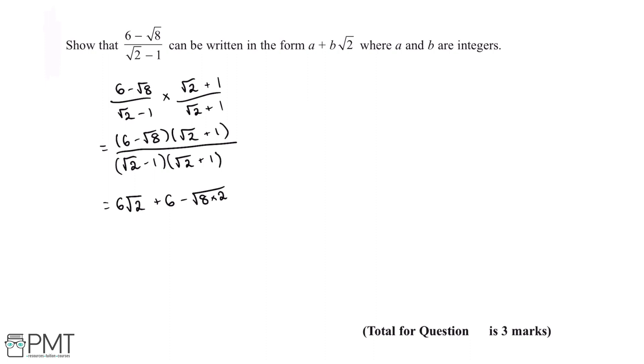And now we'll do the same for the denominator of this fraction. So √2 multiplied by √2 will give us 2. √2 multiplied by 1 will give us plus √2. Negative 1 multiplied by √2 will give us negative √2. And then negative 1 multiplied by 1 will give us negative 1.